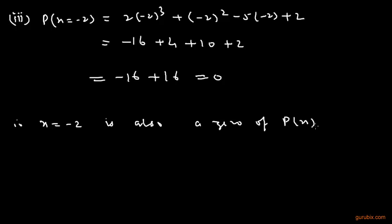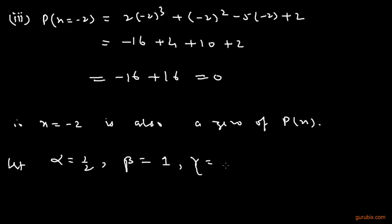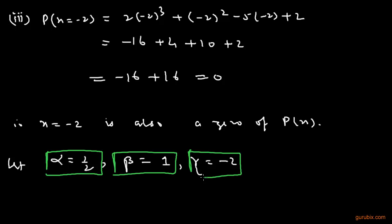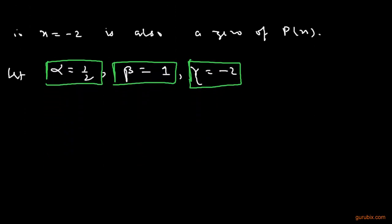So all three numbers are the zeros of the given polynomial. We let α = 1/2, β = 1, and γ = -2. We have denoted all three zeros by alpha, beta, and gamma. Now we shall verify the relationship between the zeros and the coefficients.